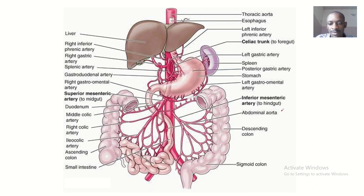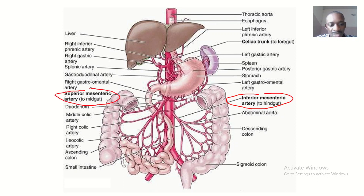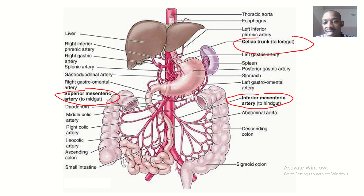Note the inferior mesenteric artery and the superior mesenteric artery — they are shown in bold, indicating that the major blood supply comes from them and their branches. You should also note the celiac trunk.